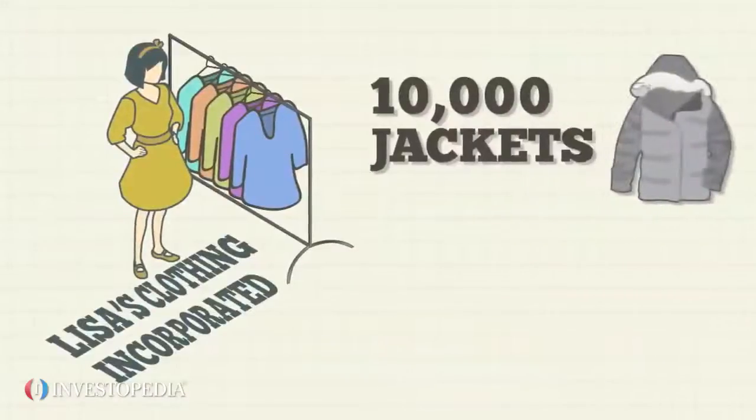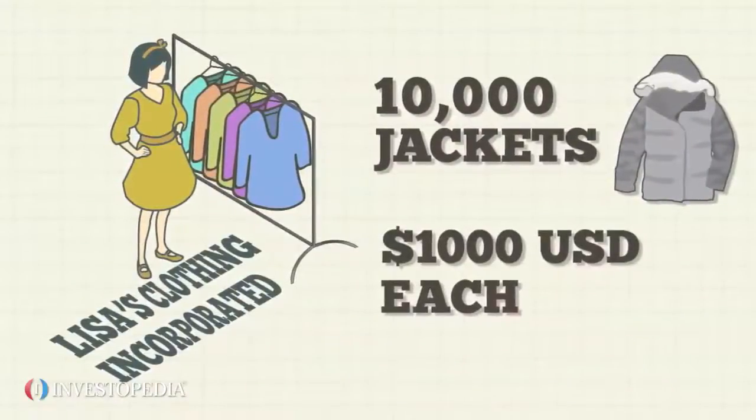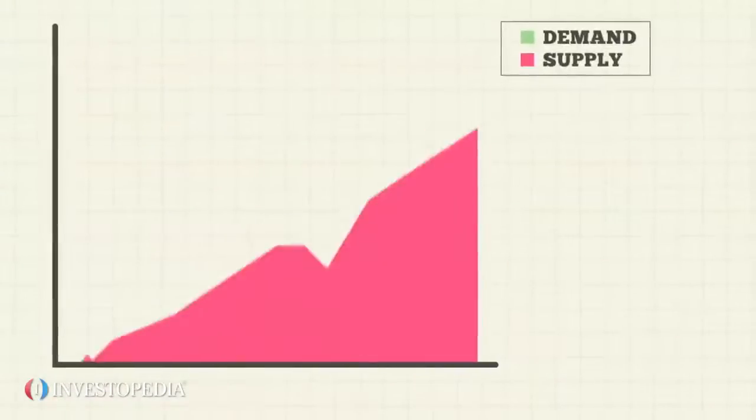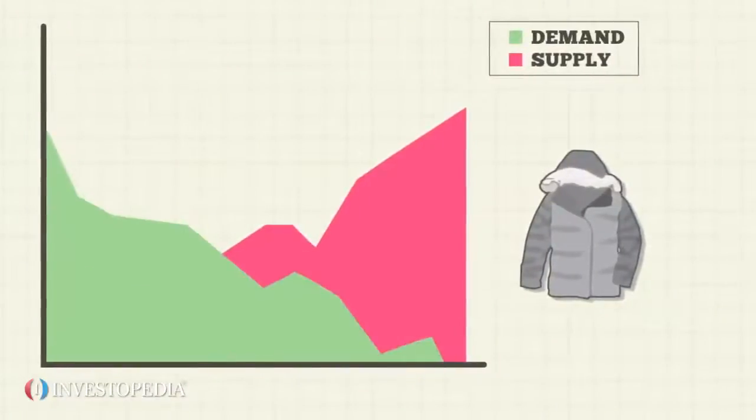Lisa's wants to sell 10,000 jackets at $1,000 each, but no one in Northville is willing to pay that price. This creates an excess supply of jackets in Northville, since the supply is greater than the demand.